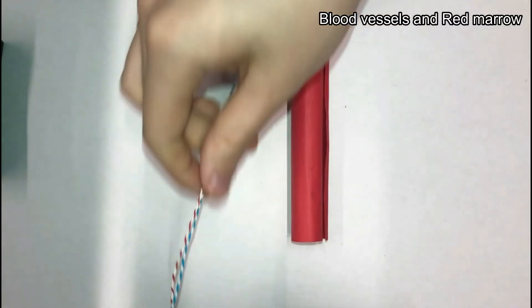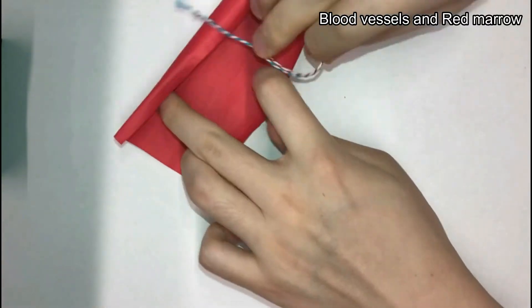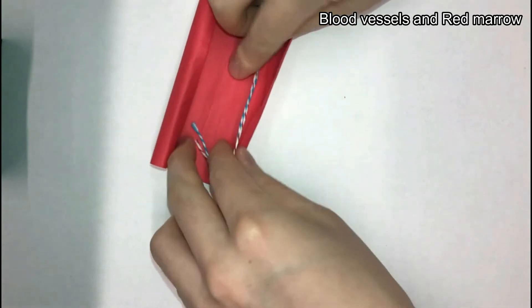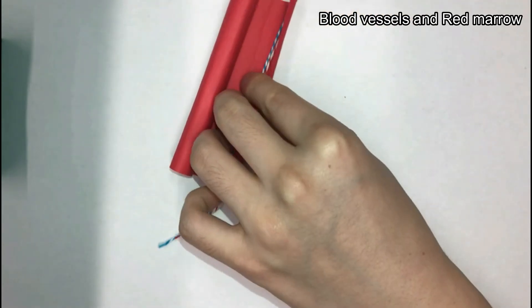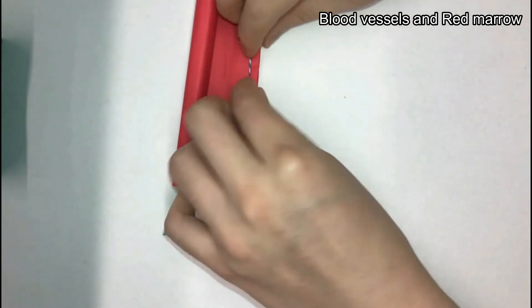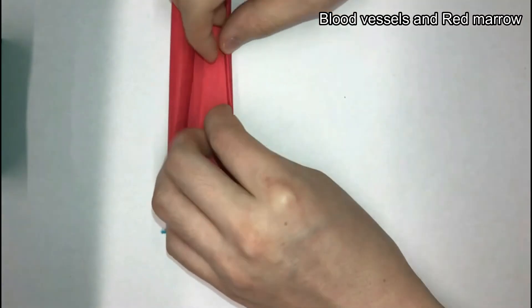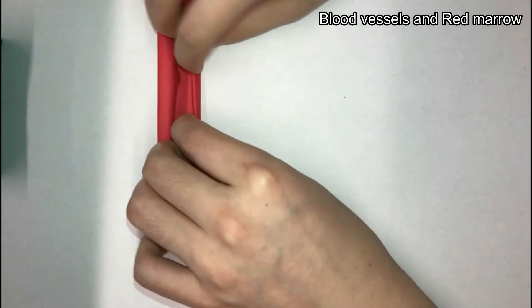First put both red and blue string inside the straw or a rolled red paper to represent blood vessels, the tubes where our blood flows through. This will represent the red marrow surrounding the blood vessels. Red marrow is where more blood cells are made.